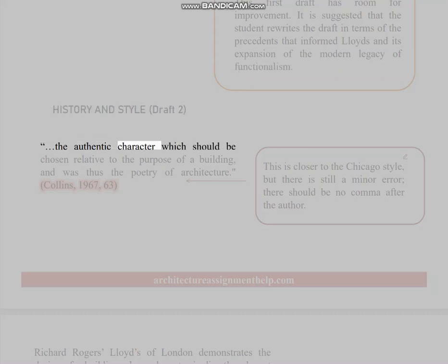The authentic character which should be chosen relative to the purpose of a building, and was thus the poetry of architecture. Collins, 1967, 63. This is closer to the Chicago style, but there is still a minor error: there should be no comma after the author.